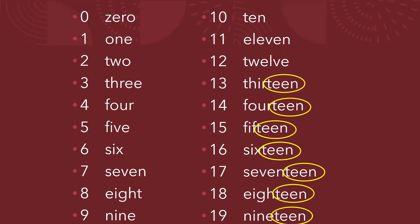Chicos, estos números tenemos que aprendérnoslos en su totalidad, ya que tienen una pronunciación propia. Más adelante veremos cómo algunos otros se juntan para crear una pronunciación — son decenas y unidades — pero en este caso del 0 al 19 se los tendrán que aprender todos y cada uno de ellos. Pongan mucha atención cómo a partir del 13 todos estos números terminan en teen. Algunos sí se modifican, como 3, 13 — cambió un poco — pero la terminación es la misma.